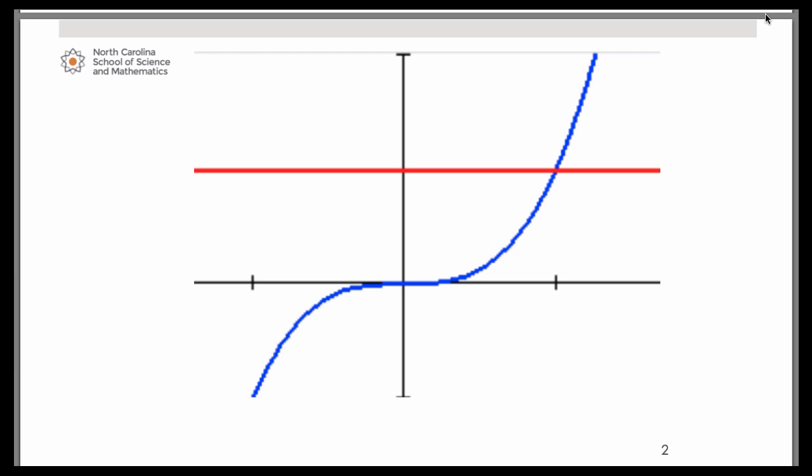So if you go back to the problem and read about the region we're talking about, we're bounded by the blue curve which is the cubic, the y-axis over here on the left, on the top side that horizontal line at y equals 1, and our axis of revolution is the vertical line x equals 1.